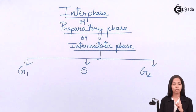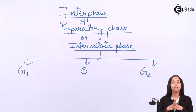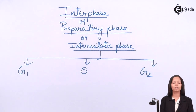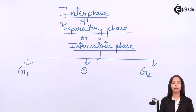G1 means first growth phase. S means synthesizing phase. G2 means second growth phase. G also stands for gap phase, so G1 means gap 1 phase and G2 means gap 2 phase.